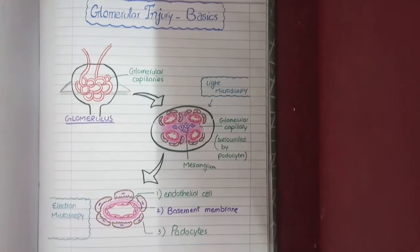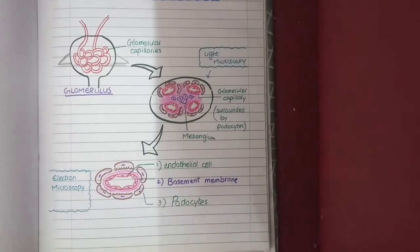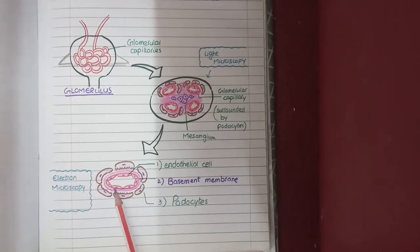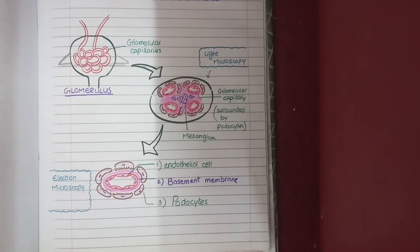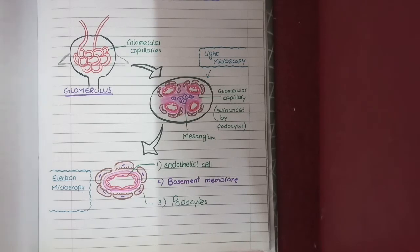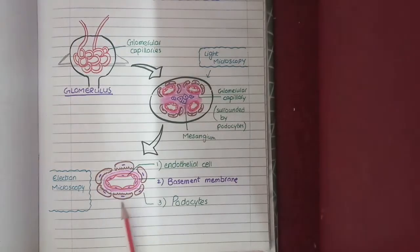To understand glomerular injury in more detail, we will observe each glomerular capillary loop under electron microscopy. On the innermost side there are glomerular capillaries formed by endothelial cells. Outside the endothelial cells there is a basement membrane, and outer to the basement membrane there are epithelial cells with foot-like projections facing towards the basement membrane. These cells are called podocytes, and the basement membrane is shared between the endothelial cells and podocytes.